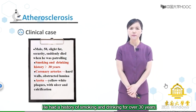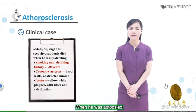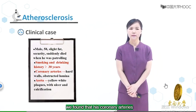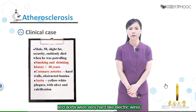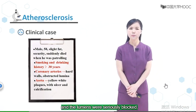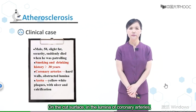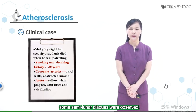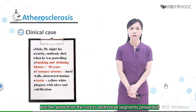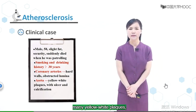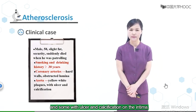He had a history of smoking and drinking for over 30 years. On autopsy, we found that his coronary arteries and aorta were very hard like electric wires and the lumens were seriously blocked. On the cut surface, in the lumina of coronary arteries, some semilunar plaques were observed. The aorta from the root to abdominal segments presented many yellow-white plaques, some with ulceration and calcification on the intima.